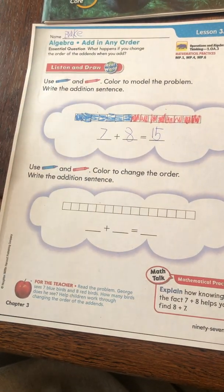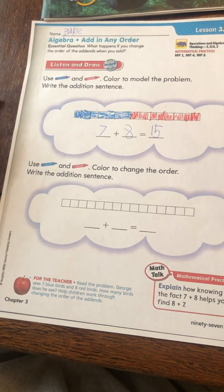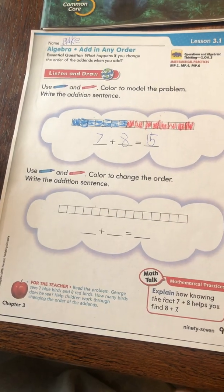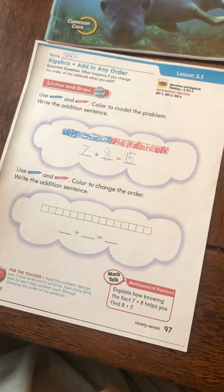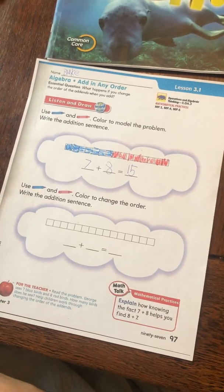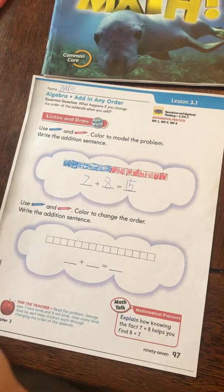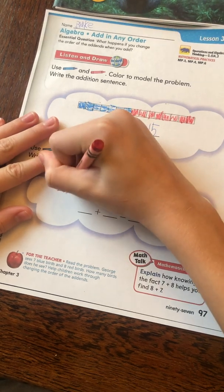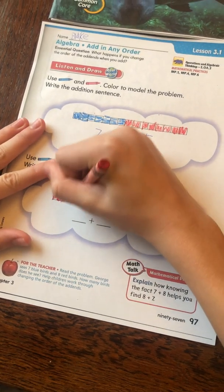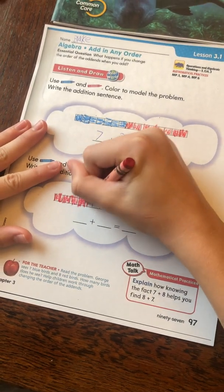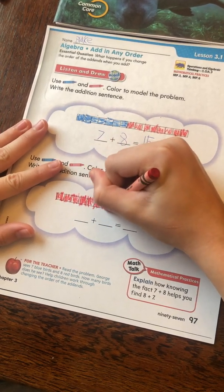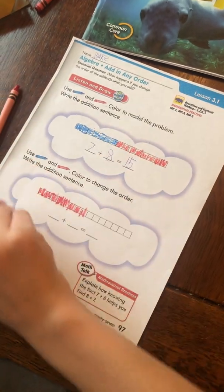Then down here, it says, use blue and red color to change the order. Write the addition sentence. So, now you're going to color the 8 red blocks first. And then the 7 blue blocks. Yes. Okay. One, two, three, four, five, six, seven, eight. Okay.